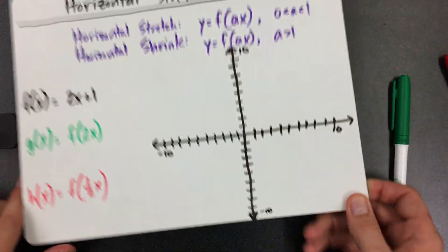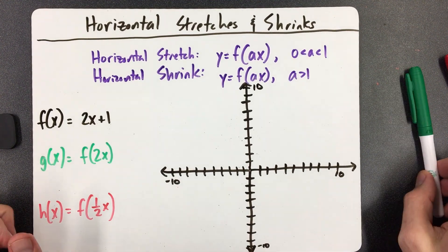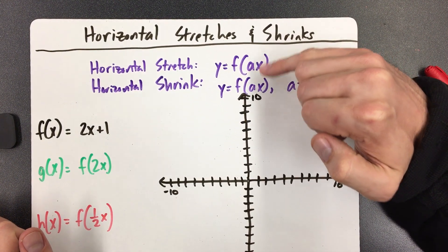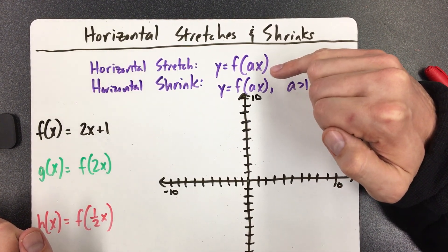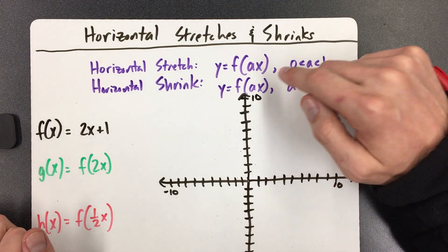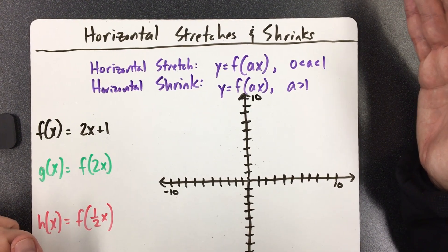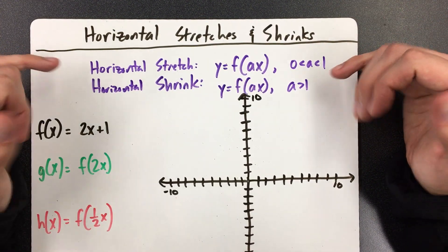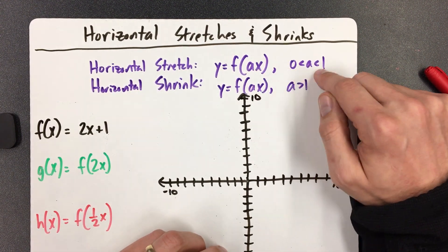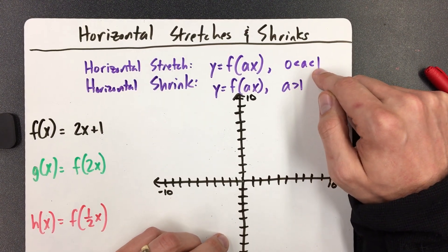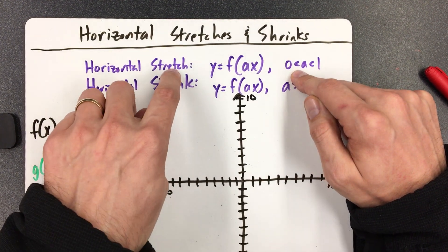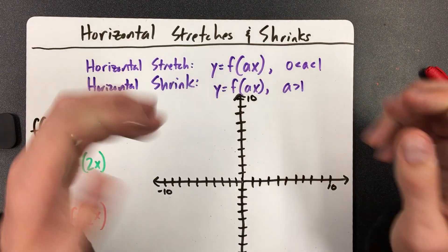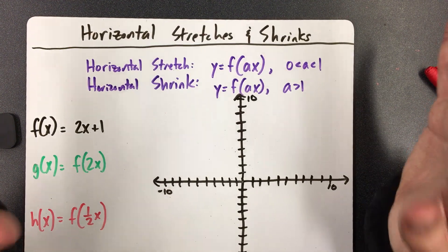Are you ready to get into the crazy one? Horizontal is going to be different. Look where the letter A is located — it's now inside the parentheses. It's part of the input, not the output. And so everything is backwards with horizontal. When your letter A is a number smaller than 1, between 0 and 1, we're actually going to call it a stretch. When it's bigger than 1, it's a shrink — the complete opposite of what we did with vertical.